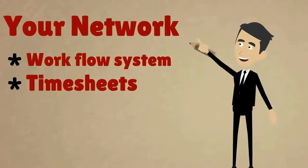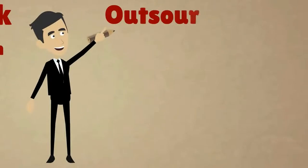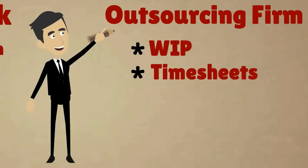If an outsourcing provider works on your network and you have a workflow system and time sheets, then ideally they should use that system. If this facility isn't available, then your outsourcing firm should have a standard WIP or workflow system that's visible anytime and provide timesheets so you can monitor, control, and manage jobs just like you do already in-house.